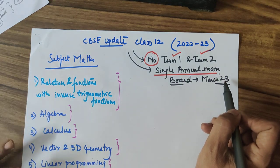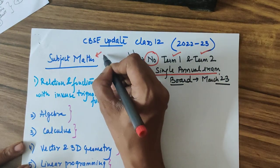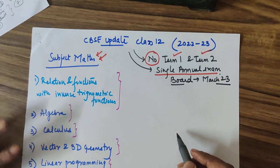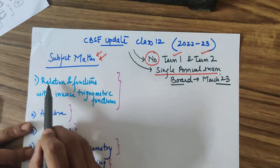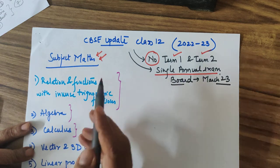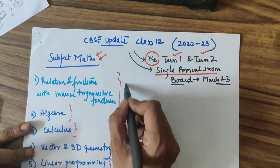I am giving you the CBSE update of the subject of maths as given by the CBSE curriculum today. Now the portions included in your syllabus of mathematics are relation and functions with inverse trigonometric functions. This particular part has a weightage of 8 marks.